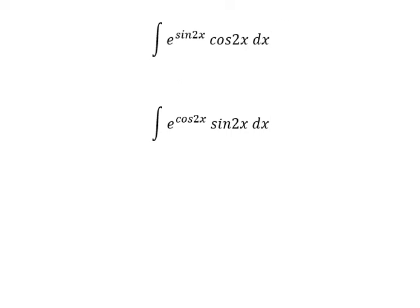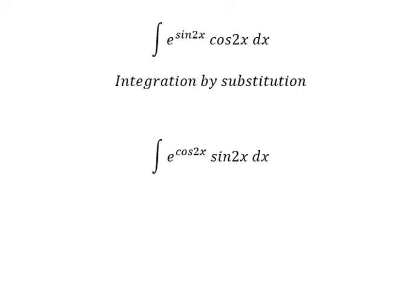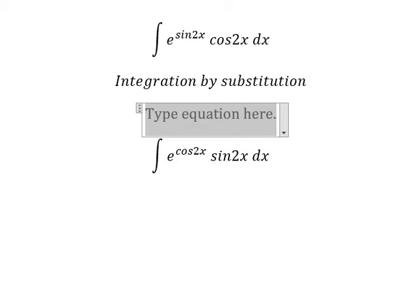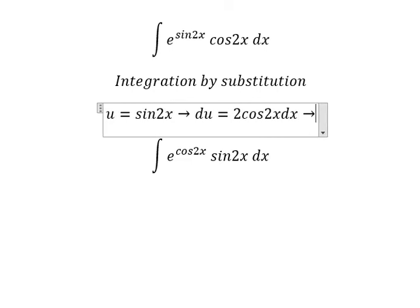We need to use integration by substitution. So I will put u equals to sin2x. Later we do first derivative for both sides, and we have 2cos2xdx. Because we don't have number 2 in here, so we need to divide both sides by number 2.